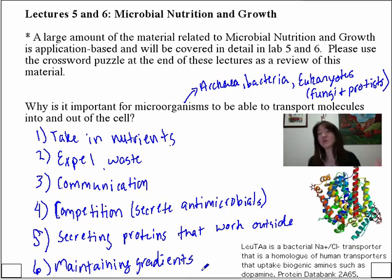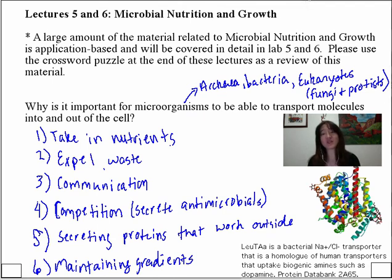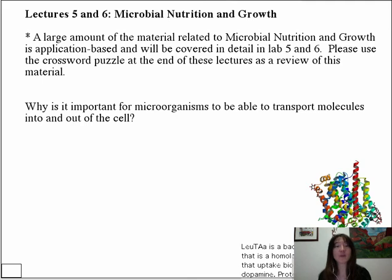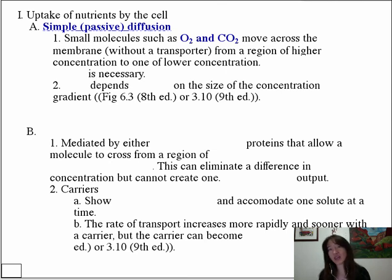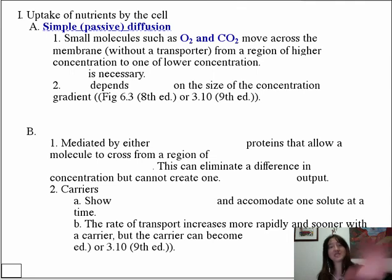Now let's begin to talk about particular transport systems. The first one we've already mentioned: the cytoplasmic membrane acts sort of like a bouncer at a dance club, only allowing in molecules that have tiny molecular weight and are highly hydrophobic. Simple or passive diffusion is the movement of highly hydrophobic, tiny molecules like oxygen and carbon dioxide to freely move across the membrane in response to their gradient — from a region of high concentration to a region of low concentration.